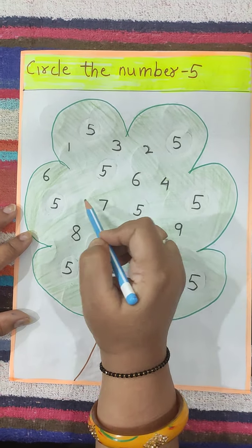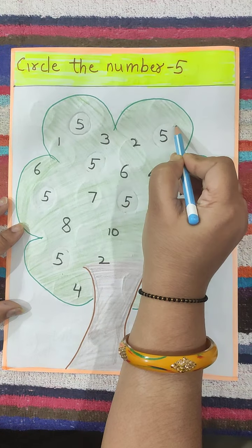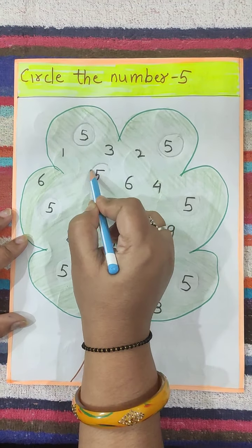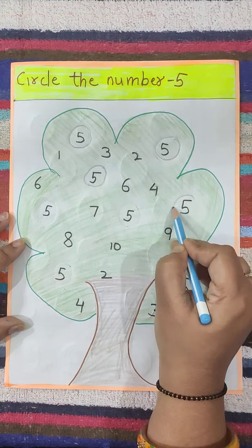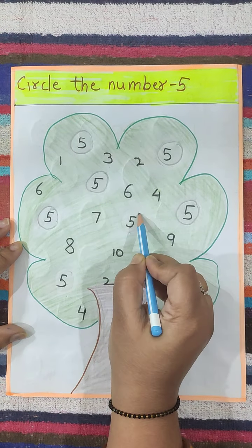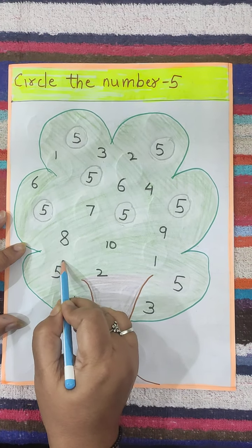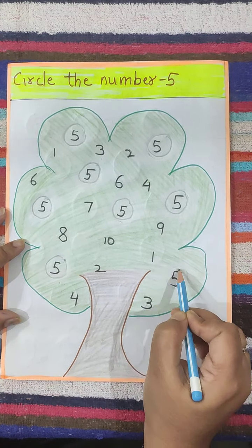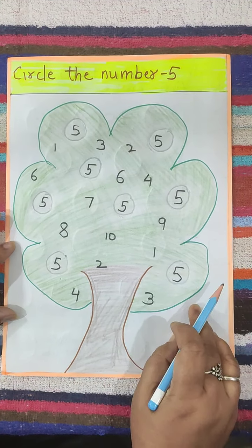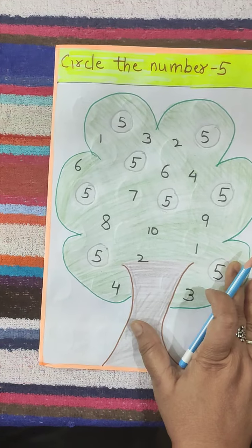So start finding. Here is 5, here is 5, here is 5, here is 5, here is 5, here is 5, here is 5, here is 5, here is 5, here is 5. Is there any other 5? No. Like this you have to do the worksheet.